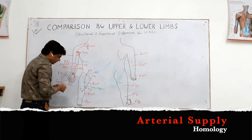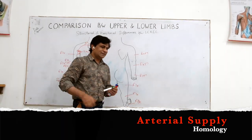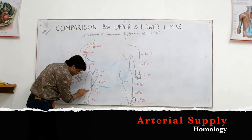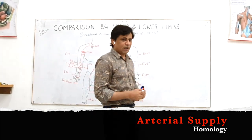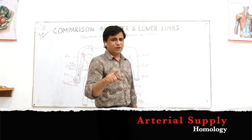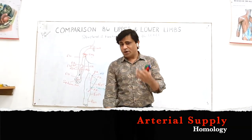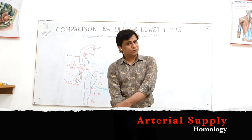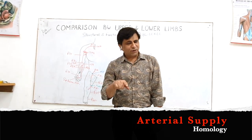In the popliteal fossa, keep comparing the homology — there is the interosseous membrane. The popliteal artery terminally divides into two branches: posterior tibial artery and anterior tibial artery. From the homology, which is the major continuation and which is the minor branch? The main continuation of the ulnar artery ran in the front of the forearm — that was the anterior interosseous artery. The posterior interosseous was the minor branch. Now think about the leg.